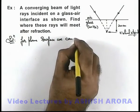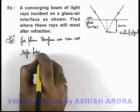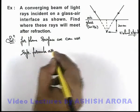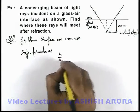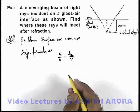We can use refraction formula as mu 1 by u is equal to mu 2 by v. In previous sections we already studied it.